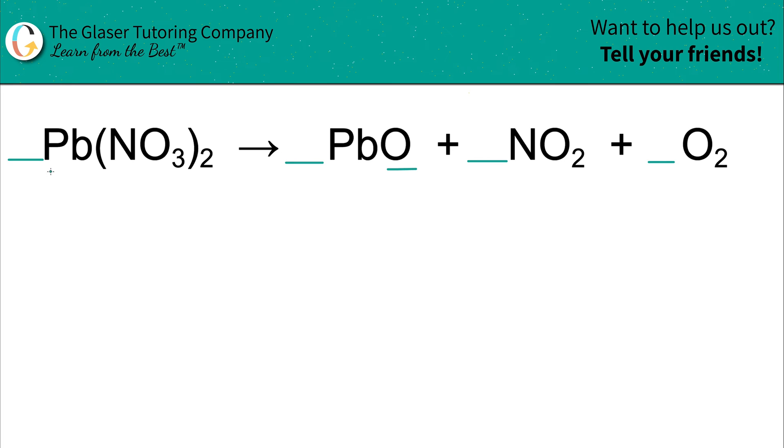So what we have here is we have one lead. That's the significance of the subscript. It tells you however many atoms you have of that particular element. So you have one lead. And in this compound over here, you also have one lead, one lead atom, that is. So that's balanced. So good, just move on.